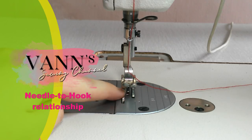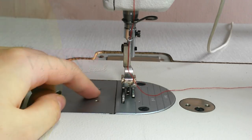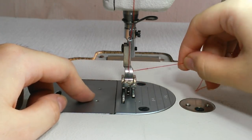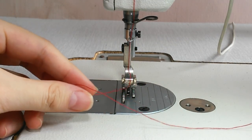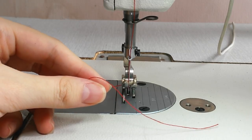Next, we need to hook out the thread from the bobbin that we previously attached. You don't need to switch on the machine or press the foot pedal. Just spin the big circle handle on the right side of the machine.